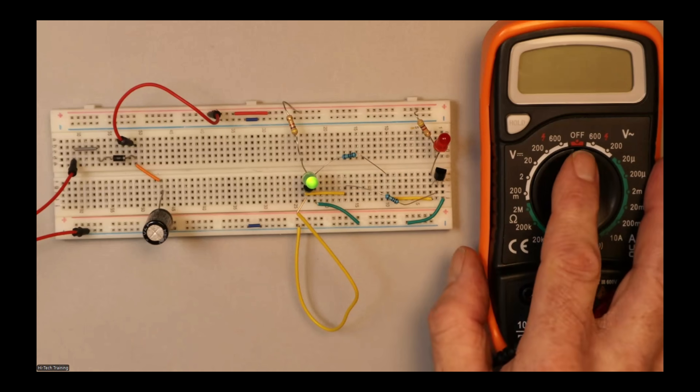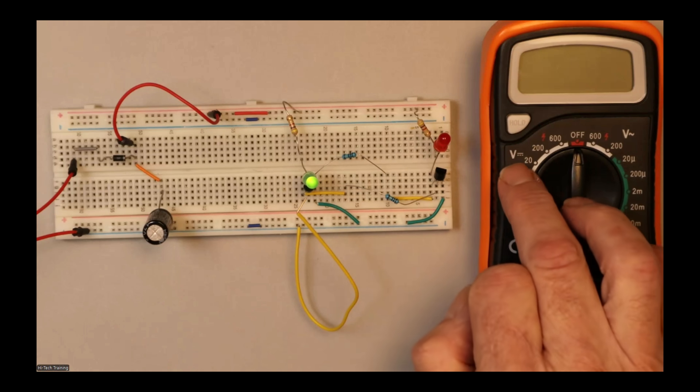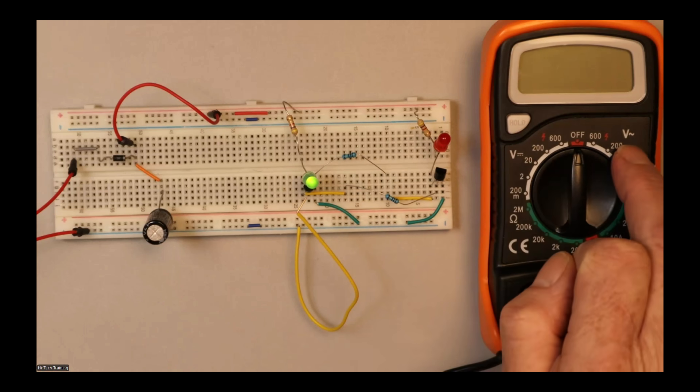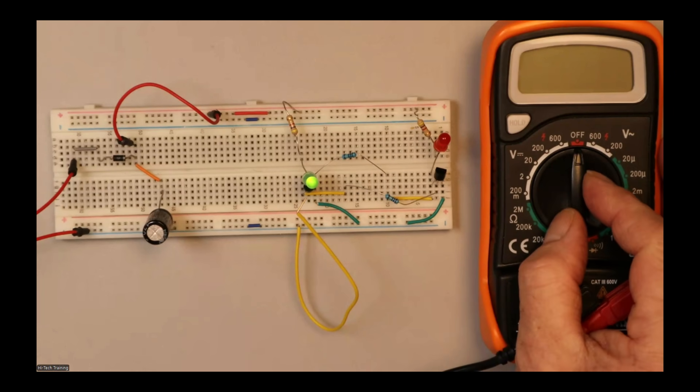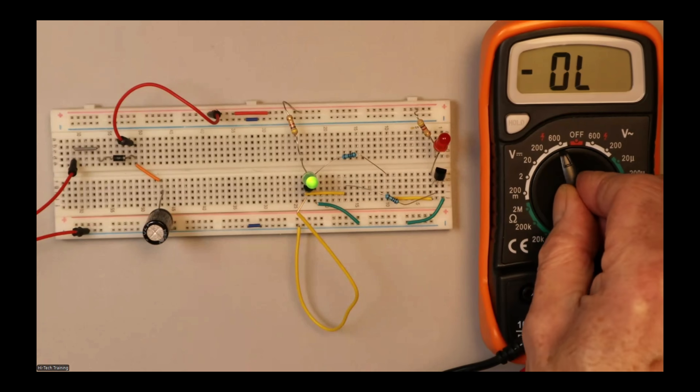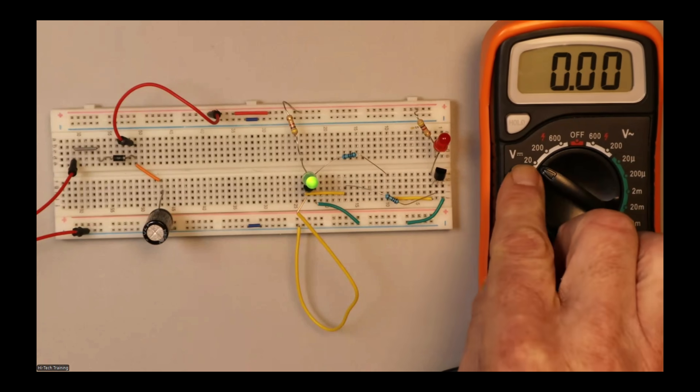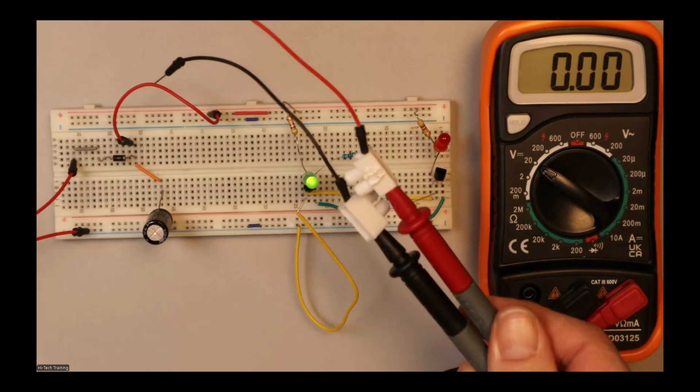We can look at the voltages on a multimeter. This meter here will show us DC voltage and AC. It'll also measure resistance, but of course you can only do that when the power is off. So I'm going to switch to DC volts here, go to DC volts, 20 volt range.